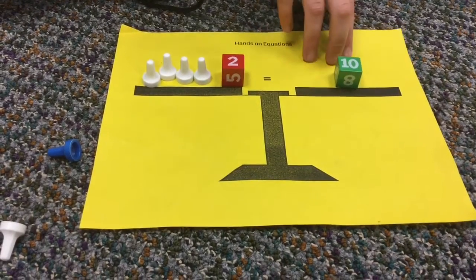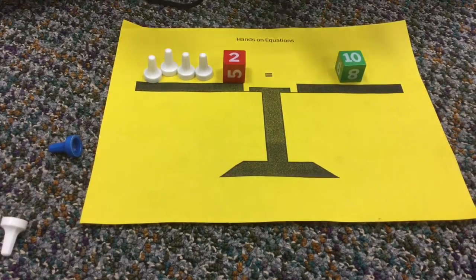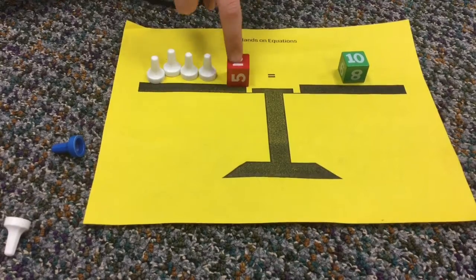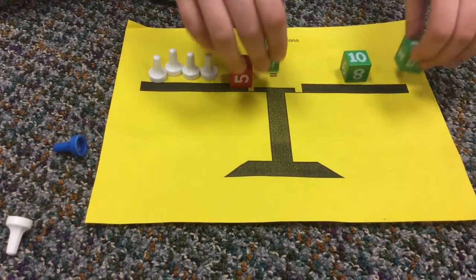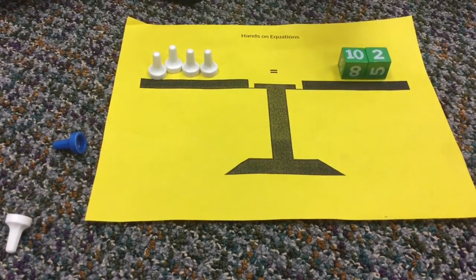So now since this spot only has the negative 10, we don't want to take the 10 away, because then there will be nothing on this side of the scale. So our objective is to get away this 2. So what I can do to take away the 2 is add negative 2 to each side. So that cancels each other out.